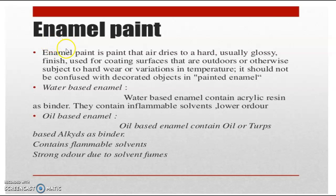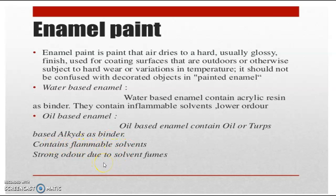Then we move to enamel paint. Enamel paint is a paint that air-dries to a hard, usually glossy finish, used for coating surfaces that are outdoors or otherwise subject to hard wear or variations in temperature. It should not be confused with painted enamel. In enamel, we have two types: water-based enamels and oil-based enamels. Water-based enamels contain acrylic resins as a binder and have non-flammable solvents with lower odor. Oil-based enamels contain oil or turps-based alkyd as a binder, contain flammable solvents, and have a strong odor due to solvent fumes.